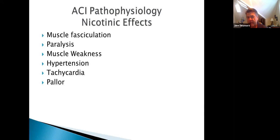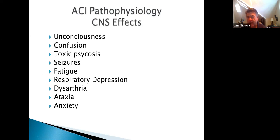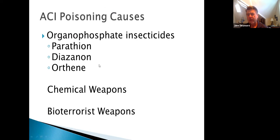Additional effects include muscle fasciculations, weakness, hypertension, tachycardia, and centrally: confusion, psychosis, seizures, fatigue, respiratory depression, ataxia, and anxiety. Common organophosphates include Parathion, Diazinon, and Orthene — sprayed on crops to prevent insect damage. Chemical and bioterrorist weapons also use this mechanism.